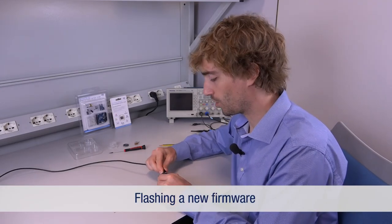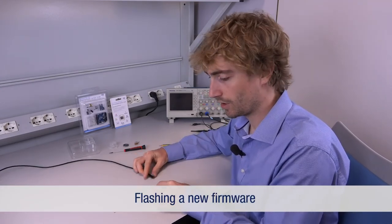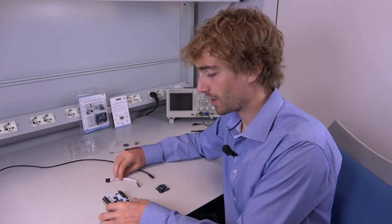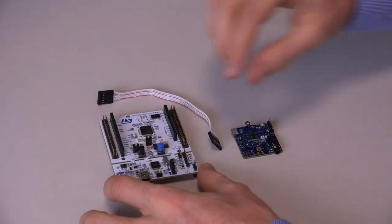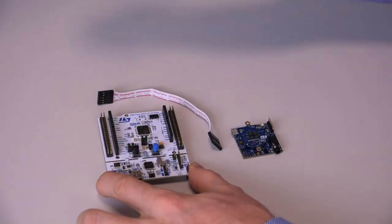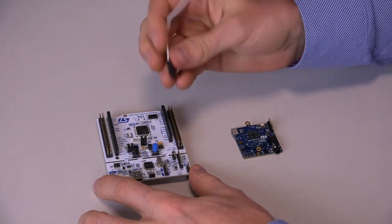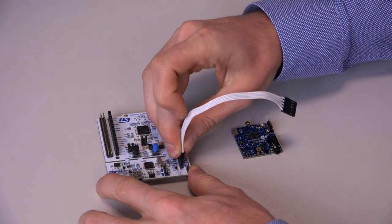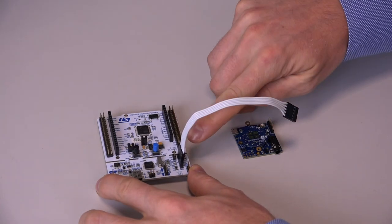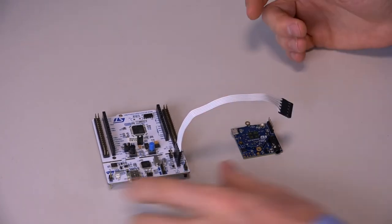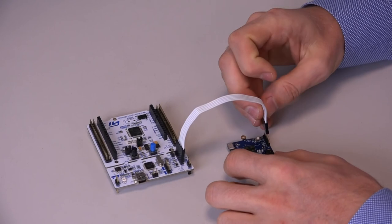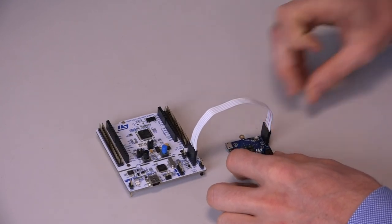Now we're going to reprogram the BlueCoin with a different application using the provided programming cable and the ST-Link debugger included in any STM32 Nucleo board. First of all we need to remove the jumpers from the CN2 connector. Then we need to plug one end of the cable into the SWD connector of the Nucleo board. Notice that the last pin will remain free. The other end of the cable must be plugged on the connector on the coin station.